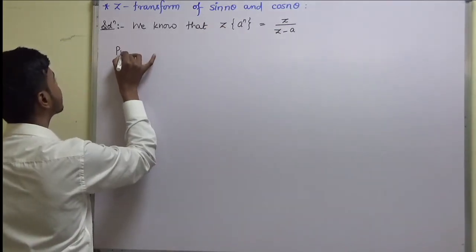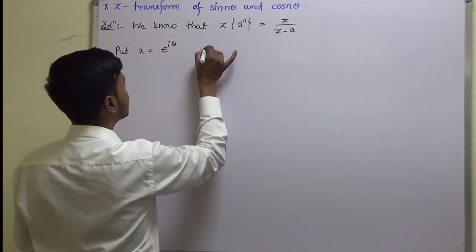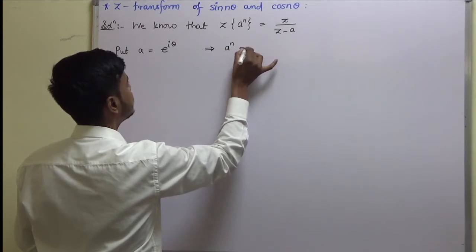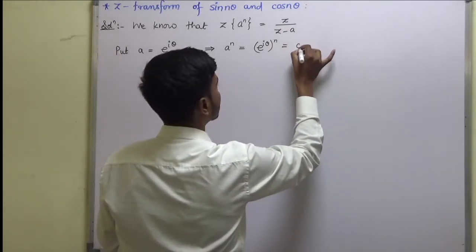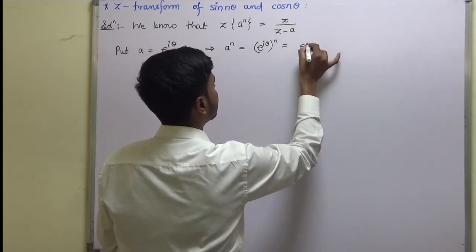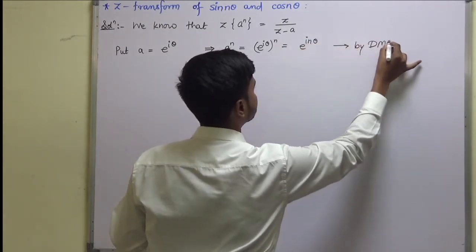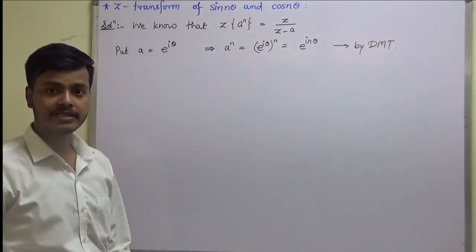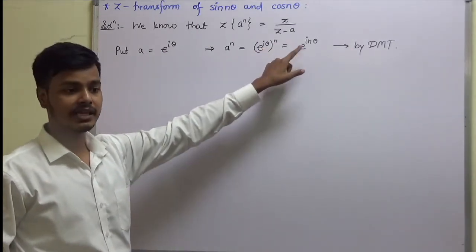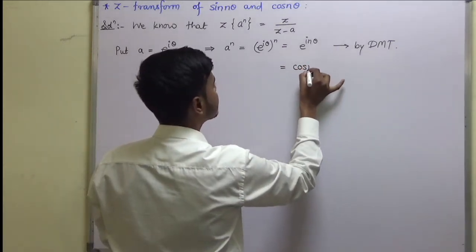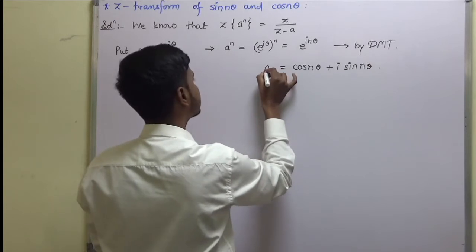Put a equal to e to the power iθ. Then aⁿ would be e to the power iθ raised to n, which equals e to the power inθ by De Moivre's theorem that we have already learned. And e to the power inθ equals cos(nθ) plus iota sin(nθ). So this is our aⁿ.